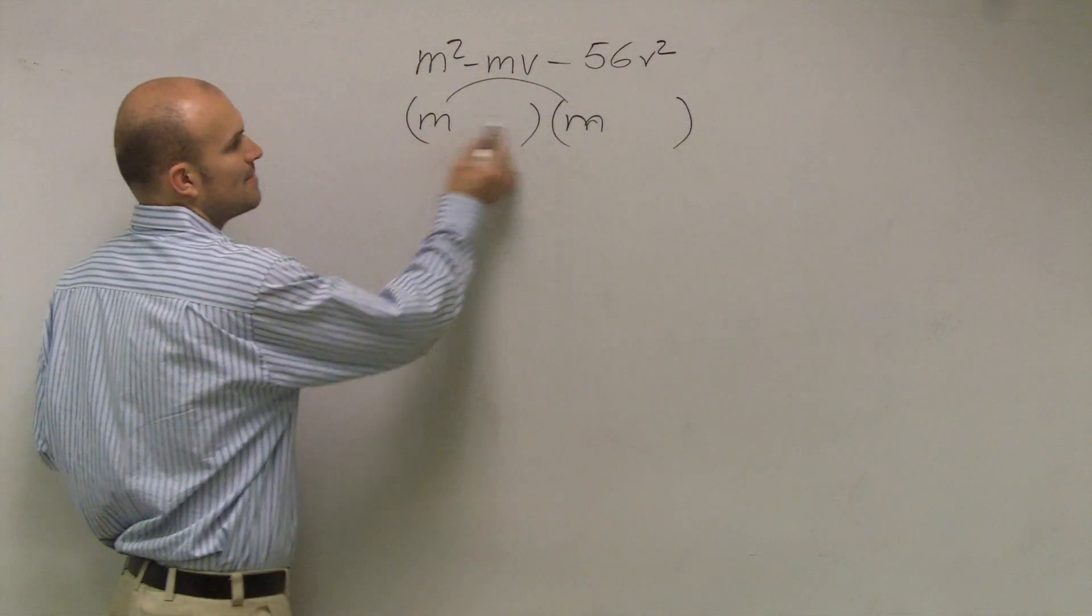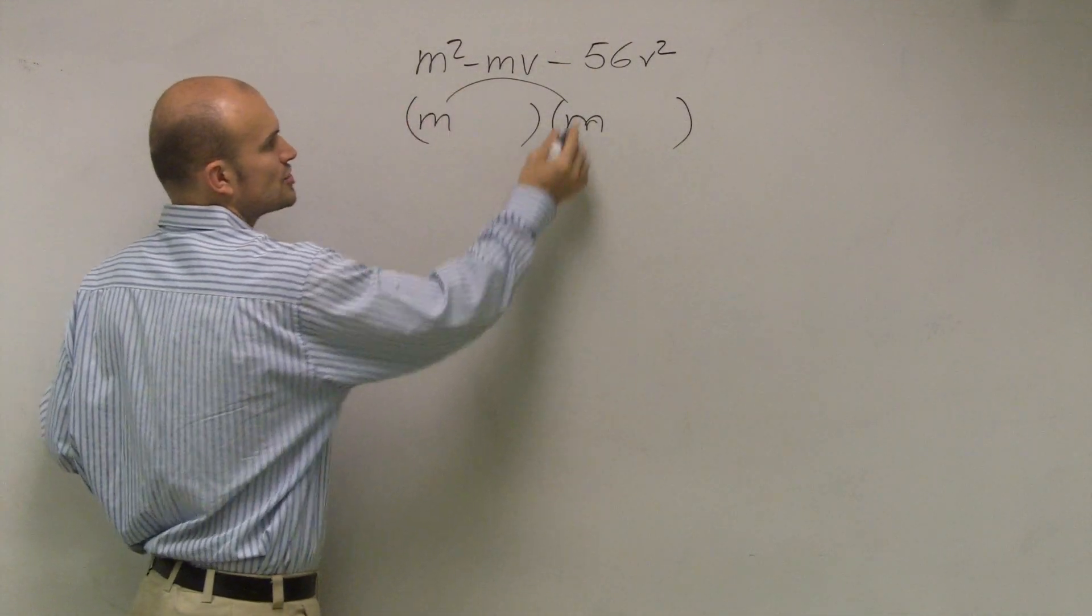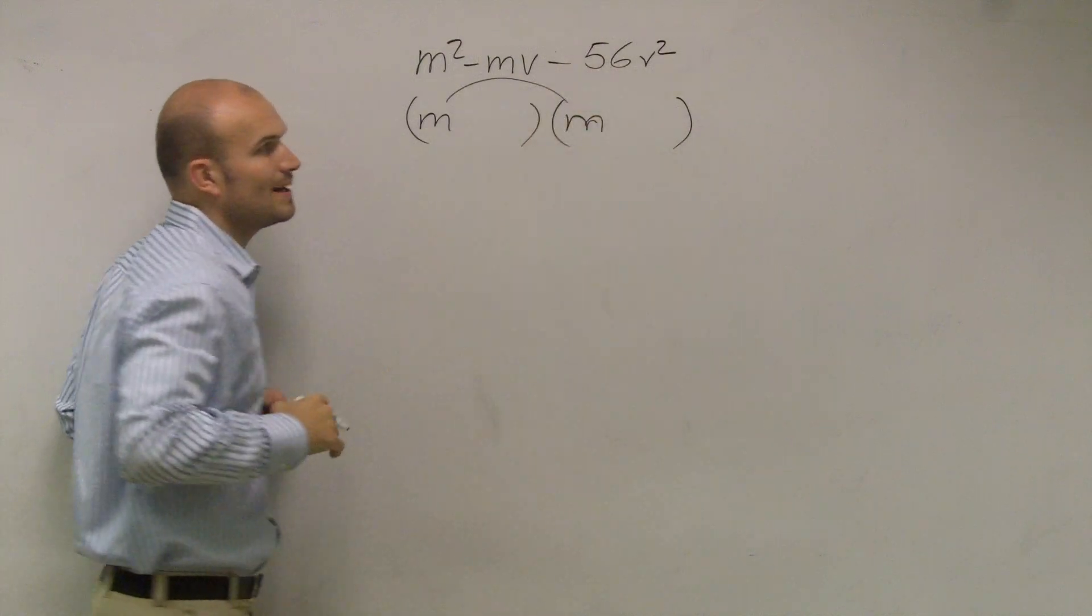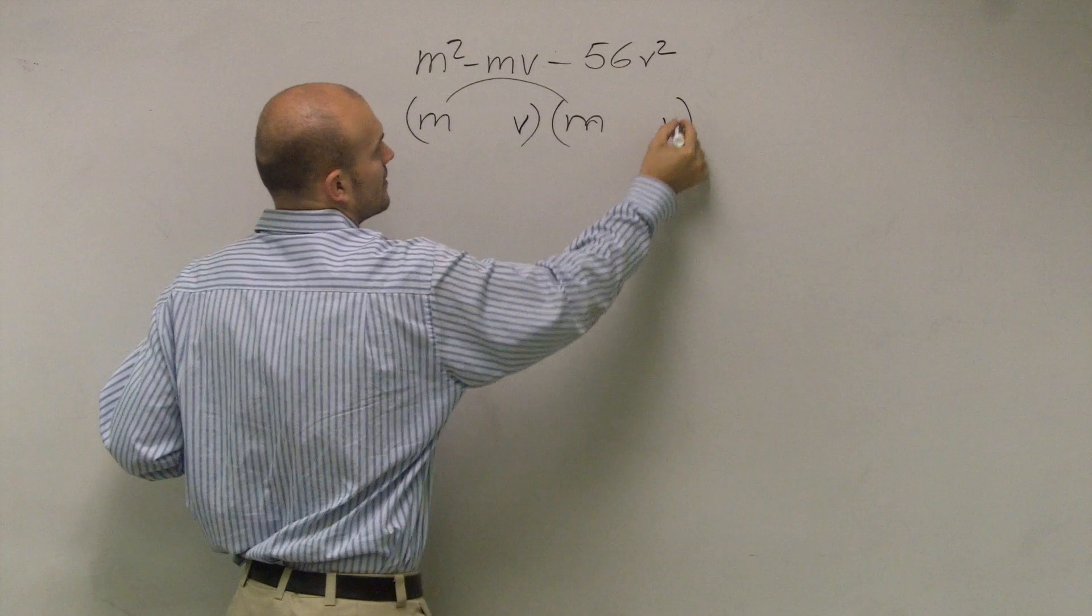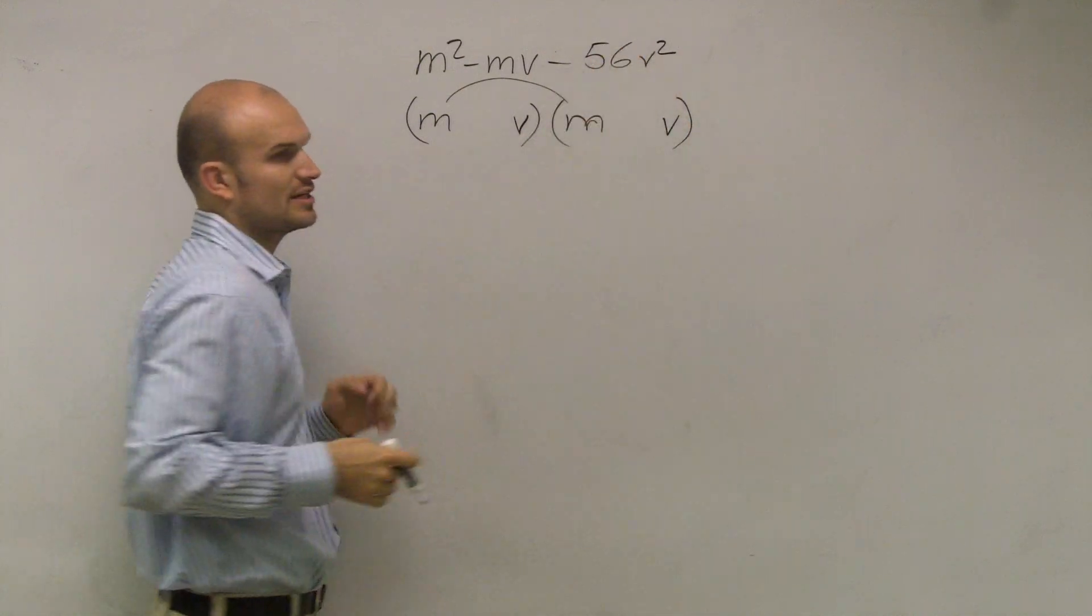All I want you to do is notice that m times m is m squared. So no matter what my numbers that are going to multiply to give me negative 56, there's also going to be a v there. Because v times v is also going to give me v squared.